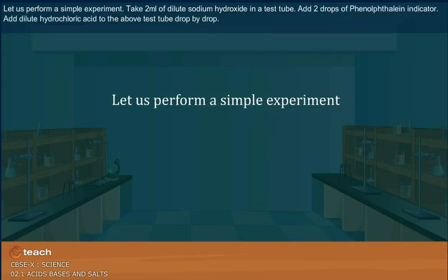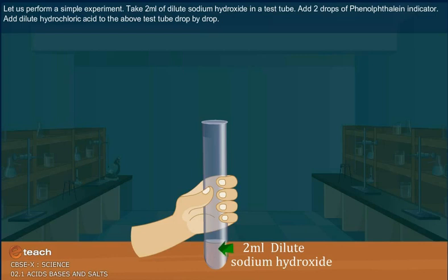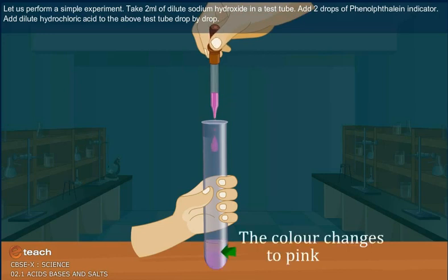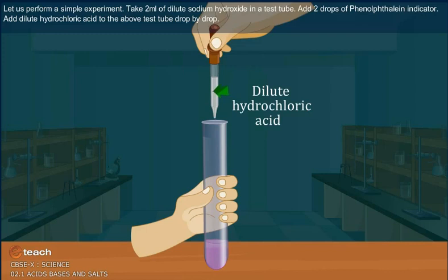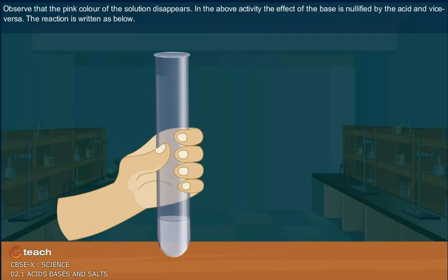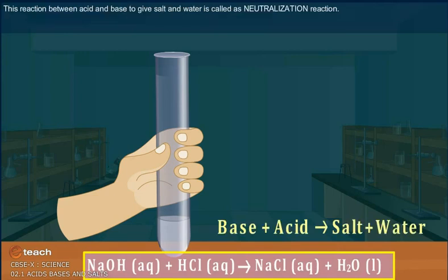How do acids and bases react with each other? The effect of an acid is nullified by a base and vice versa. Take 2 ml of dilute sodium hydroxide in a test tube, add 2 drops of phenolphthalein indicator, then add dilute hydrochloric acid drop by drop. Observe that the pink color of the solution disappears. This reaction between an acid and a base to give salt and water is called a neutralization reaction.